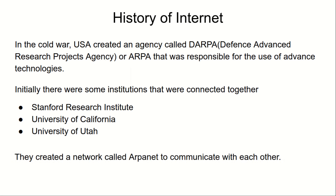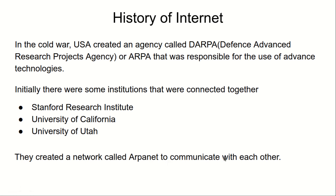Basically they faced a problem: each of the institutions was far from each other. Stanford had a different location, the University of California Los Angeles had a different location, and the University of Utah had a different location. So they created a network called ARPAnet to communicate with each other from far places.